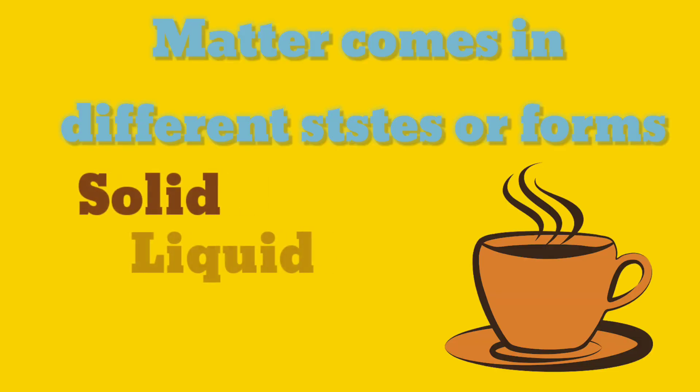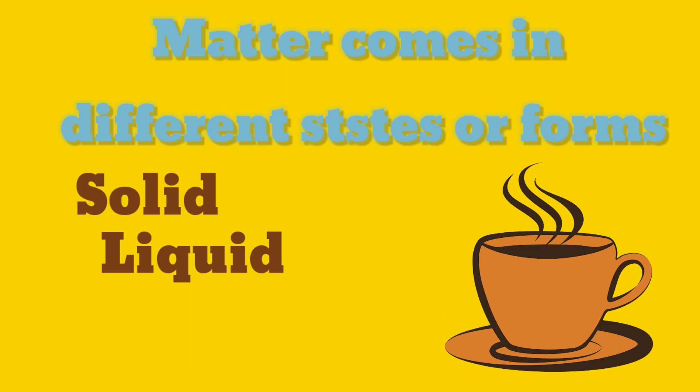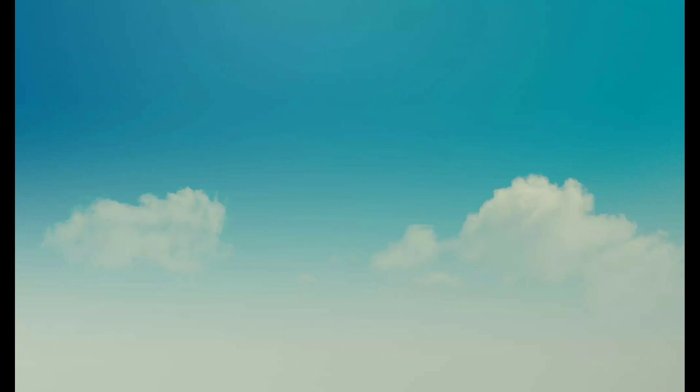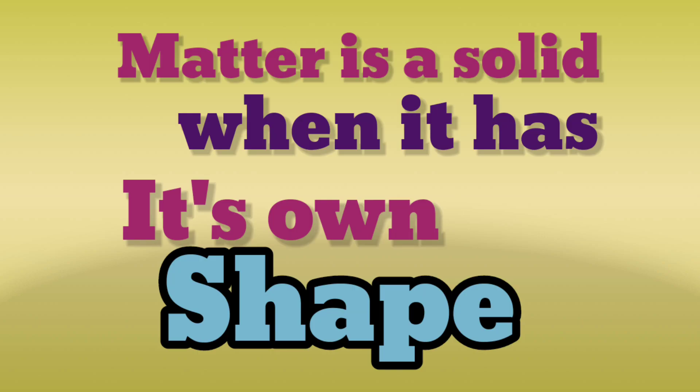Matter comes in different forms like solid, liquid, and gas. Today we are focusing on solids and liquids and how to classify them. We are going to start with solids. A matter is a solid when it has its own shape.